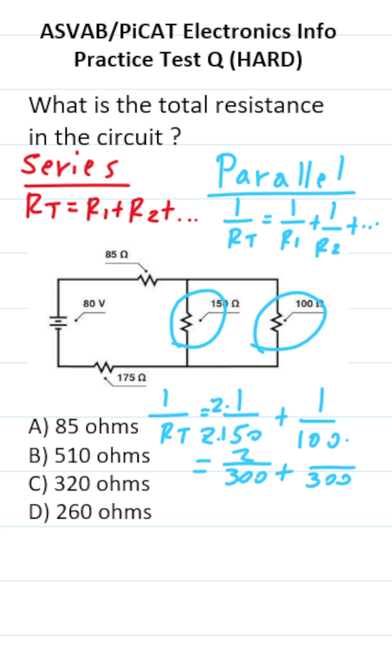We're going to write 100 as 300. We have to multiply it by 3. So this is 3 over 300. This becomes 5 over 300. Again, total resistance is 1 over RT, so this is going to be equal to 300 over 5, which is 60.